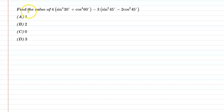In this question, we need to find the value of 4(sin^4 30°) + cos^4 60° - 3sin²45° - 2cos²45°.